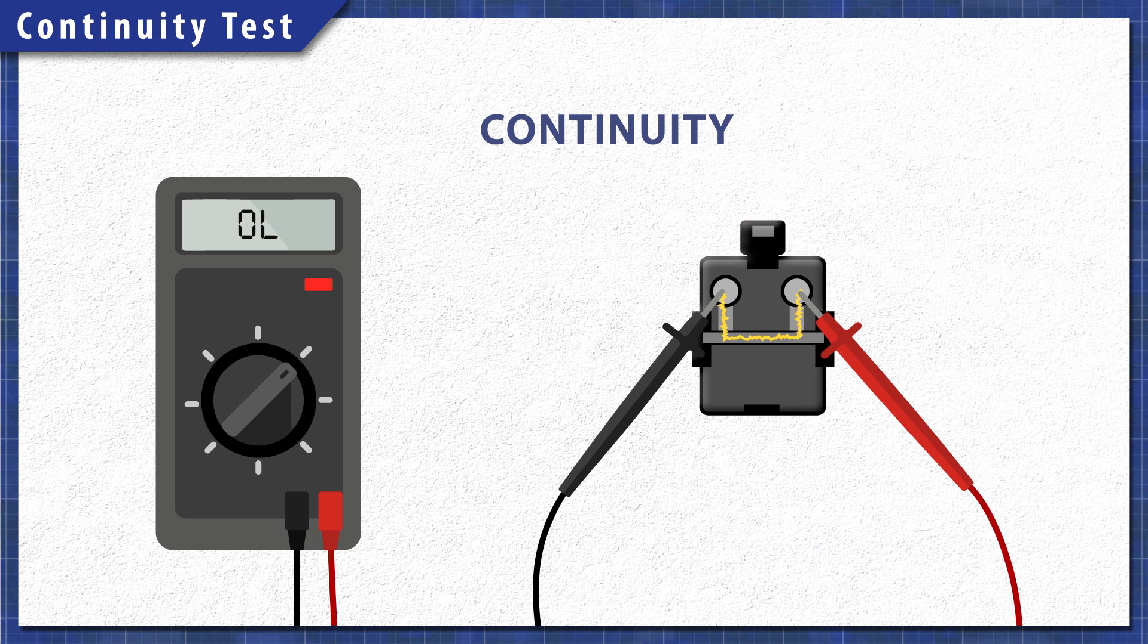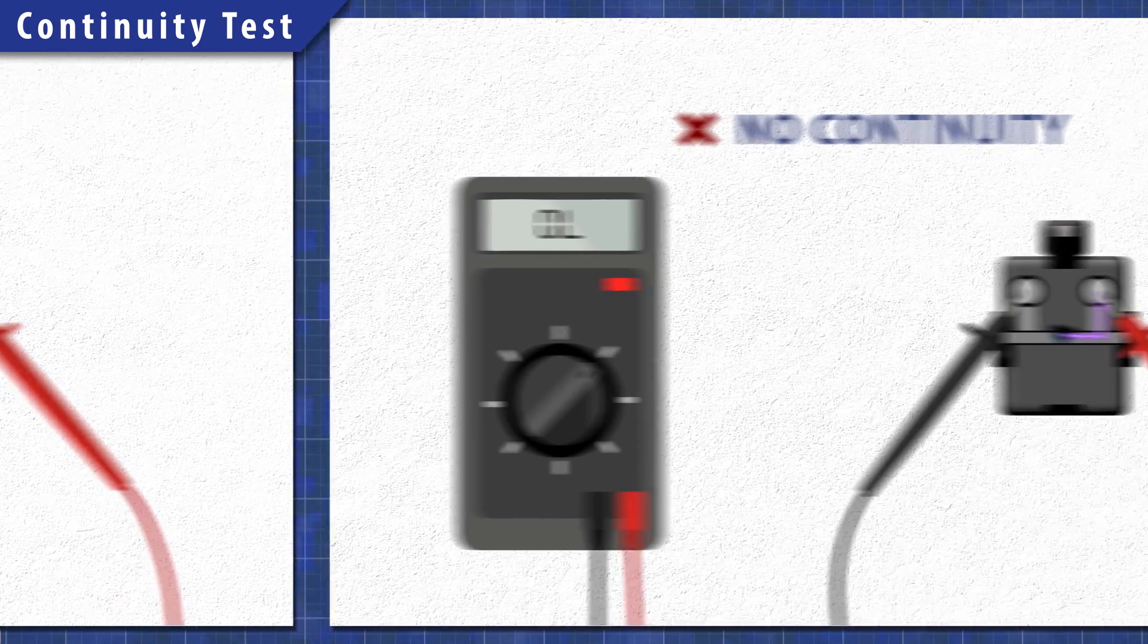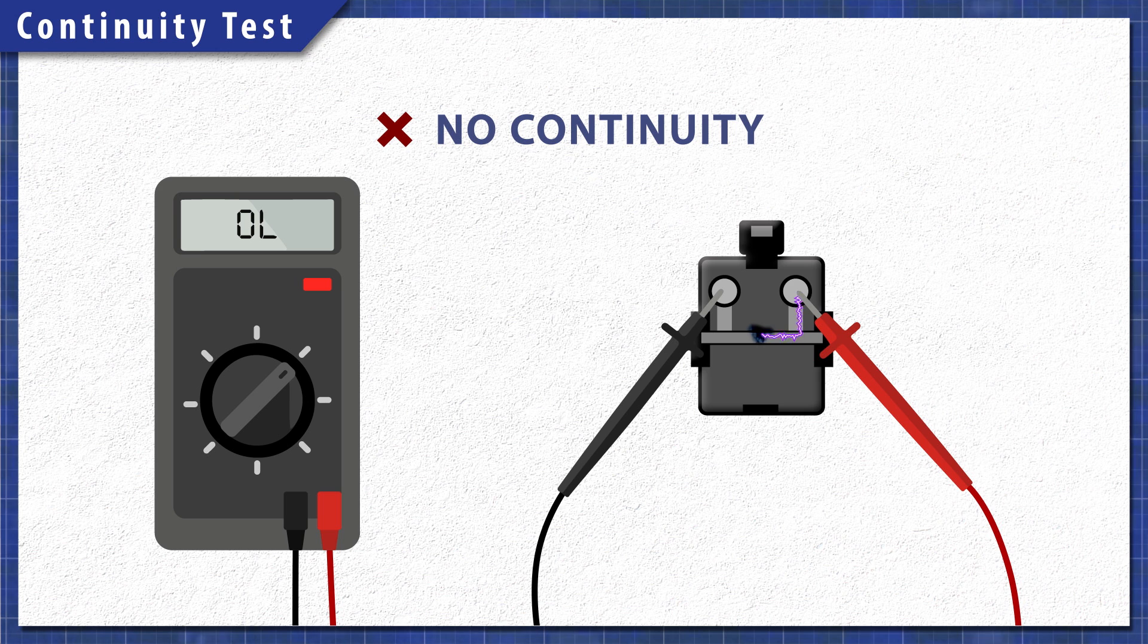Using a multimeter, components can be tested for continuity. A continuity test will determine if there is a continuous path for electricity to flow through. Without continuity, the component will not work and will need to be replaced.